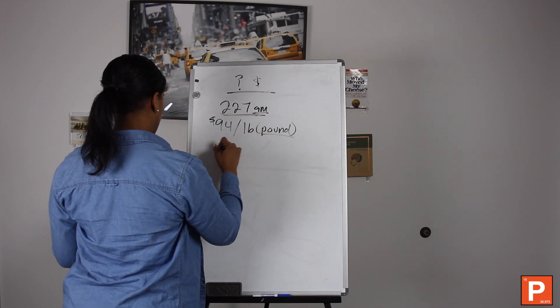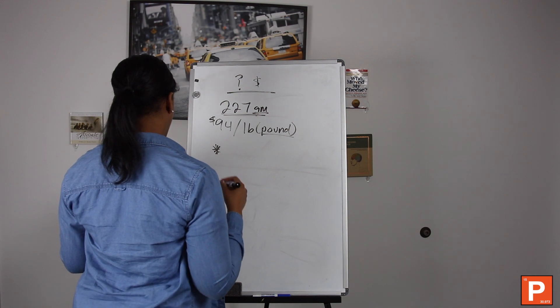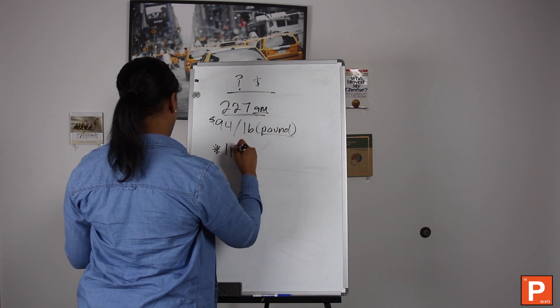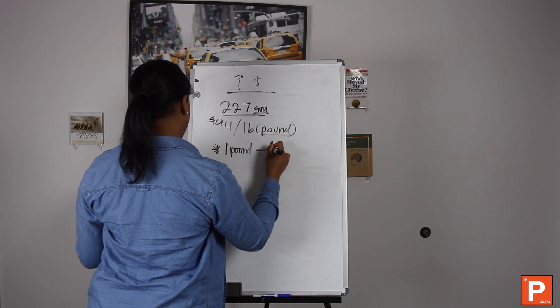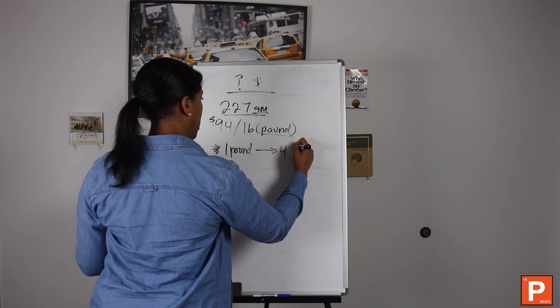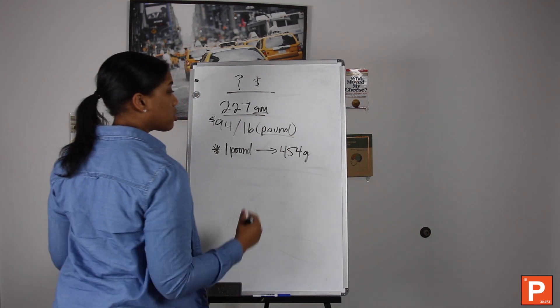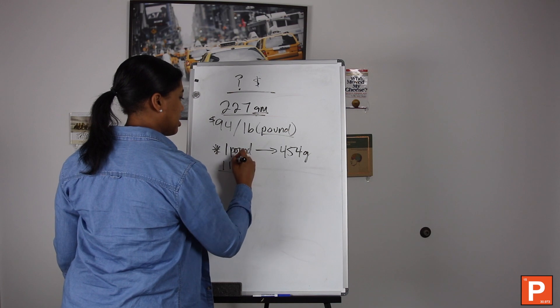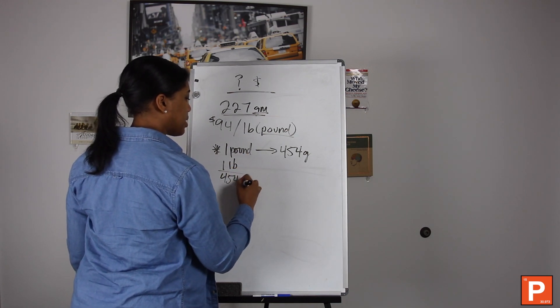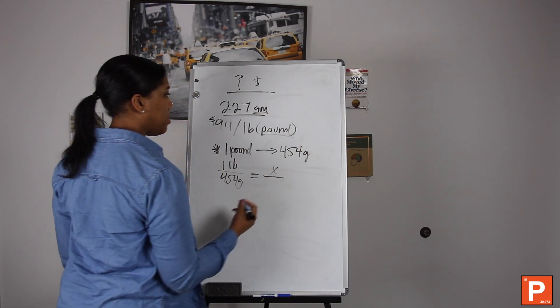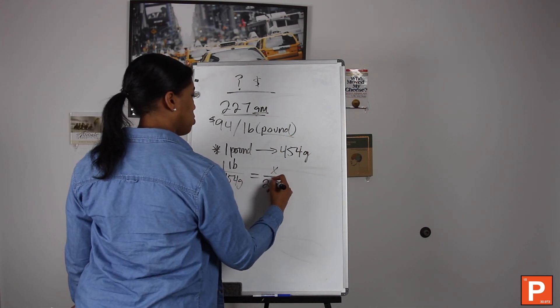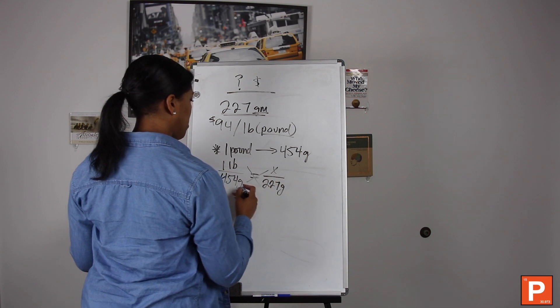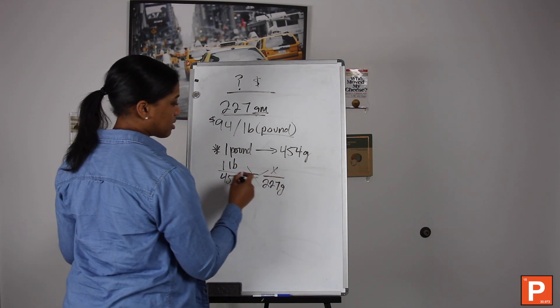Rule of thumb that we know: we know that one pound represents or is equivalent to 454 grams. So let's set up the ratio like normal. If one LB is equivalent to 454 grams, then how many LBs or pounds is equal to 227 grams? So you're just going to cross multiply that there.